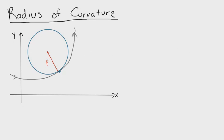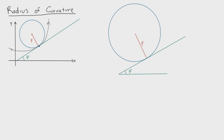Next, we look at the tangent line at that given point. We define the angle relative to the horizontal axis and the tangent line to the point we're interested in as phi. This angle actually relates to the radius of curvature and how the radius of curvature changes over time, and I'm going to show you how — it's a simple geometric problem.